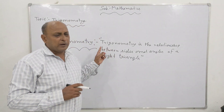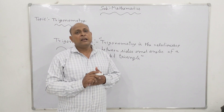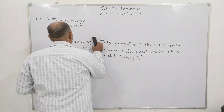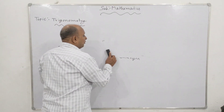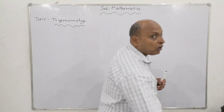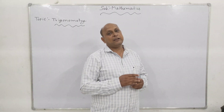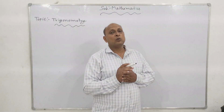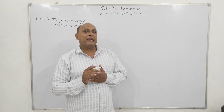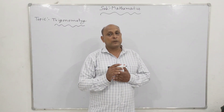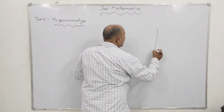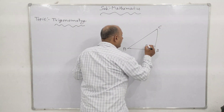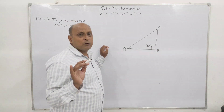After completing the definition of Trigonometry, I want to explain the Trigonometric ratios. To explain the Trigonometric ratios, first of all I want to explain the right triangle. A right triangle has one angle equal to 90 degrees.